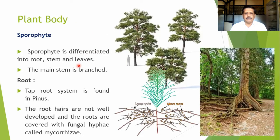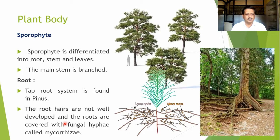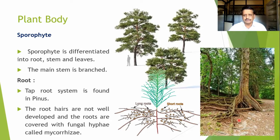When we talk about the sporophytic plant body, the sporophyte of this plant is differentiated into root, stem, and leaves. The main stem is branched. The root is a tap root system which grows well, and the roots are covered with fungal hyphae called mycorrhizae. The sporophytic plant body has a well-developed root system and a canopy differentiated into leaf-like structures.